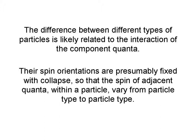The difference between different types of particles is likely related to the interaction of the component quanta. Their spin orientations are presumably fixed with collapse, so that the spin of adjacent quanta within a particle vary from particle type to particle type.